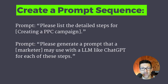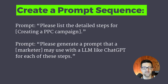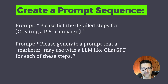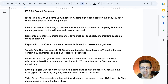The first step is to create a prompt sequence. These are two prompts that have helped me create these sequences. The first one: please list the detailed steps for whatever process you're trying to automate. Then follow that up by asking ChatGPT to create prompts for each one of those steps. Here's what that looks like for today's example — I went through those, edited them a little bit, and came up with this list of prompts that has been very helpful for creating PPC campaigns.